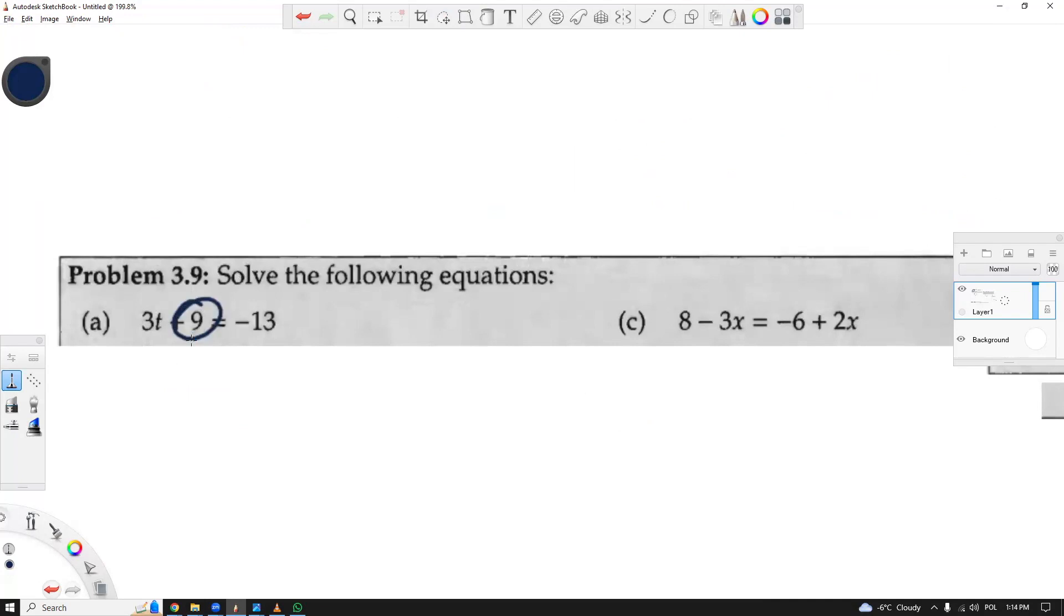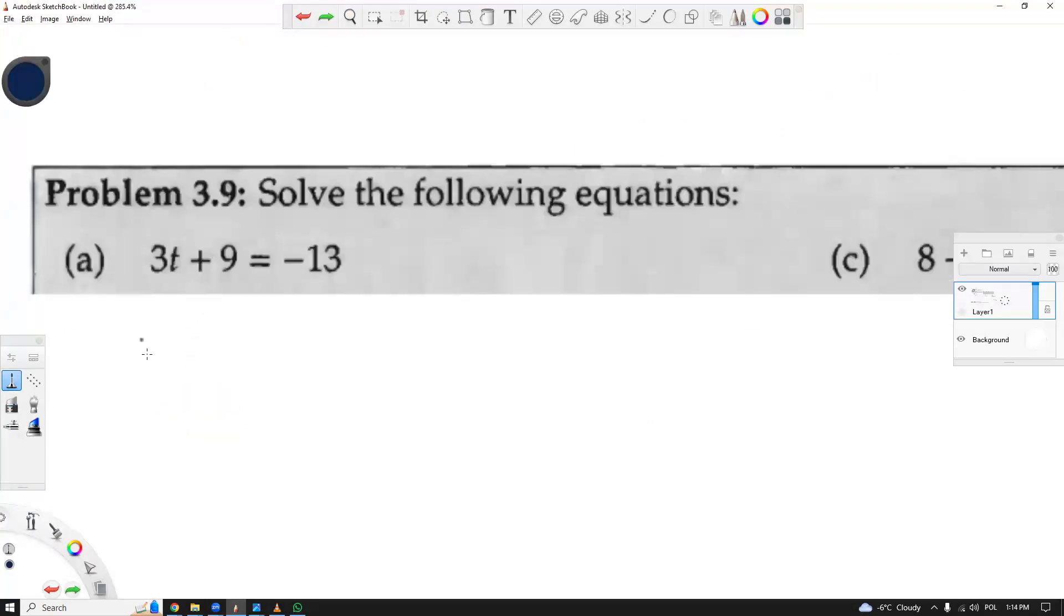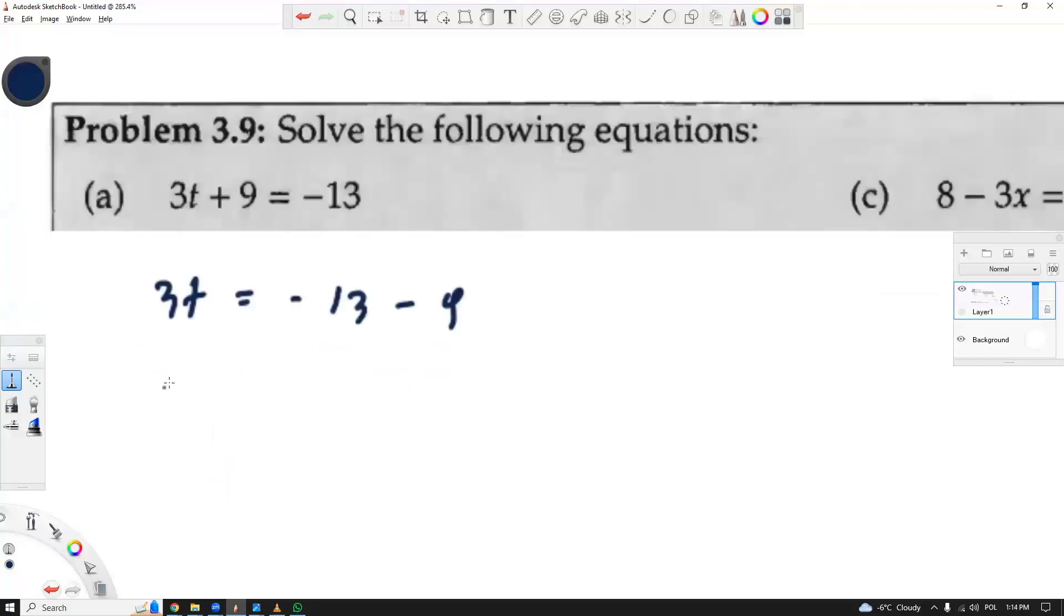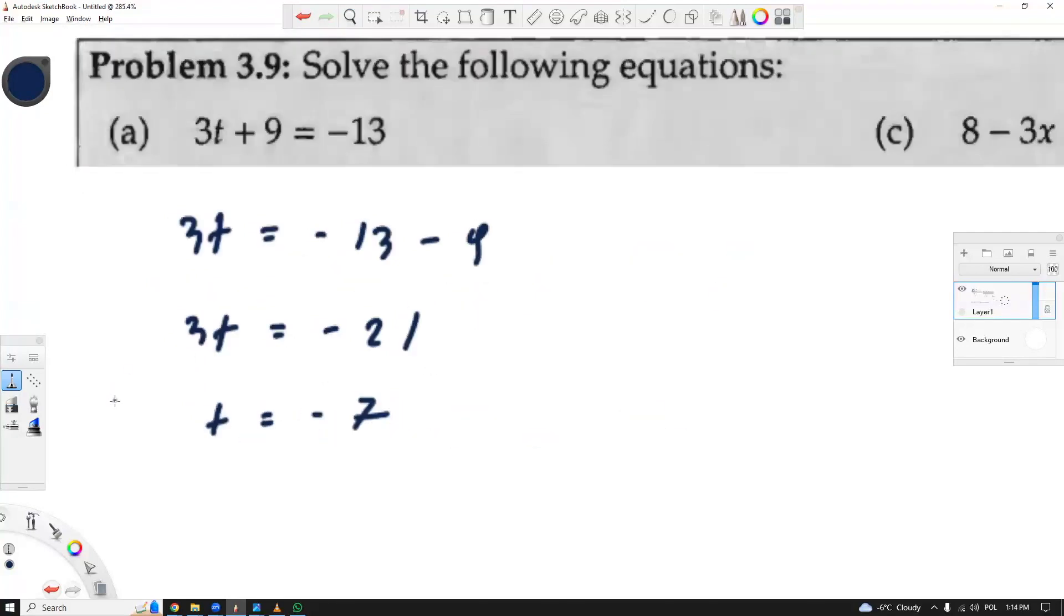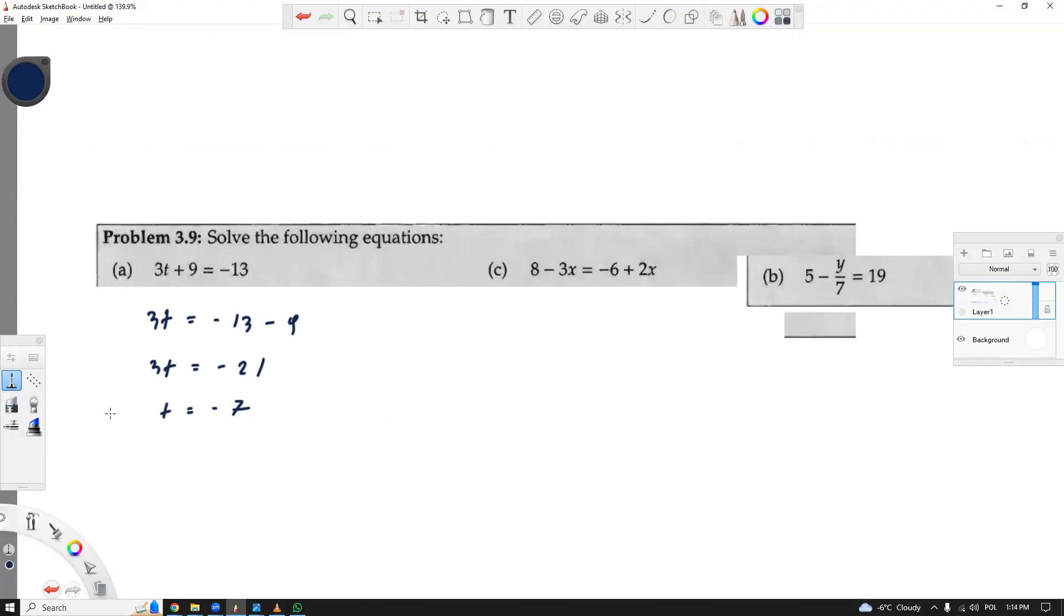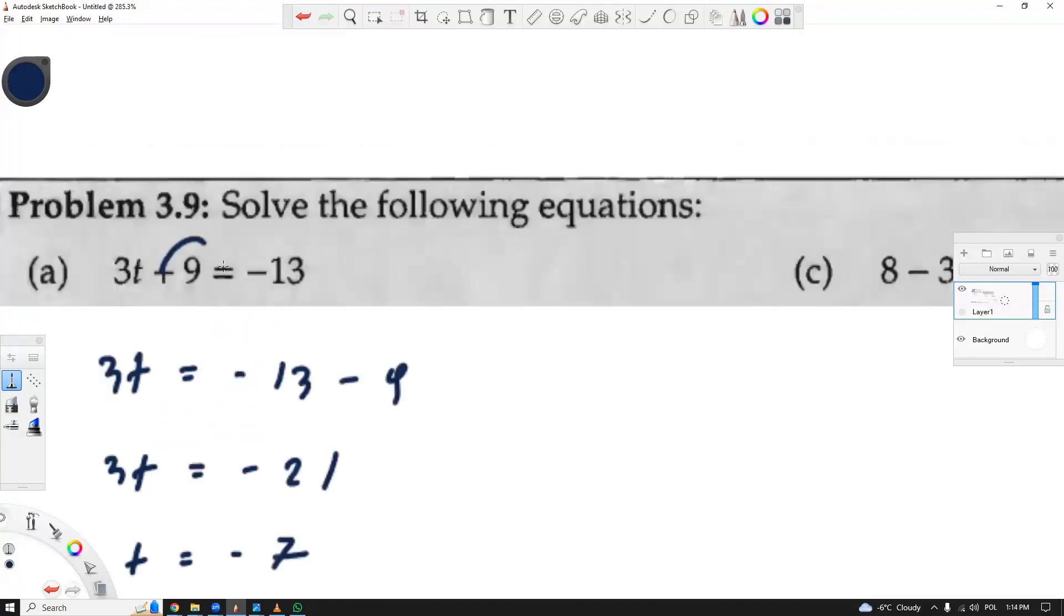Here, first we have to get rid of other terms, so let's get rid of the 9. So 3t minus 13 minus 9, 3t equals negative 21. t equals negative 7. So first get rid of regular numbers. Add them, subtract, then have your t isolated by either dividing, multiplying, depending on the case.